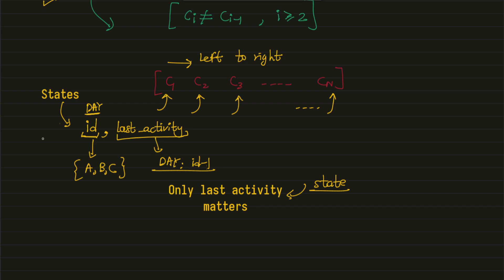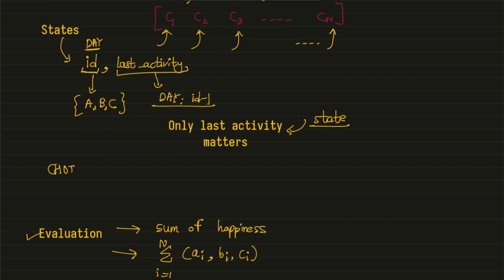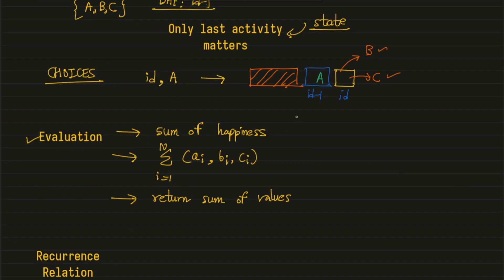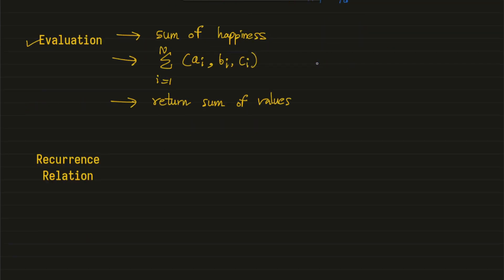Let's understand what choices we have. Say we are currently at index id and the last activity performed was activity a. The sequence must have been something like activity a on the previous day. Then the choices available on this day are only b and c, because you cannot perform the same activity again. We restrict choices based on what was previously chosen.